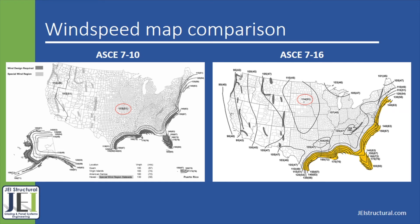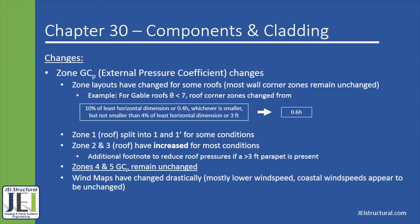Next, let's go over the last chapter in this presentation, Chapter 30, Components and Cladding. Chapter 30 is arguably the most influential chapter for most JEI projects, and there have been a few changes from the previous code. The first is that external pressure coefficients for roofs have changed, resulting in a change of wind pressure on the different zones of a building's roof. Overall, most of the external pressure coefficients for roofs have increased. Also, the wind zone locations have changed more for some roof types, which will be covered in the next slide.